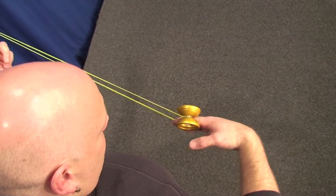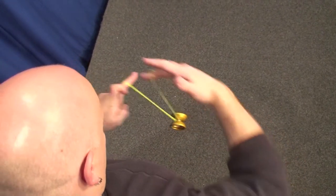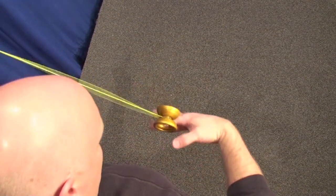Now bring your throw hand around your non-throw hand and do a somersault. Let the yoyo swing around and catch it back on your index finger once again.